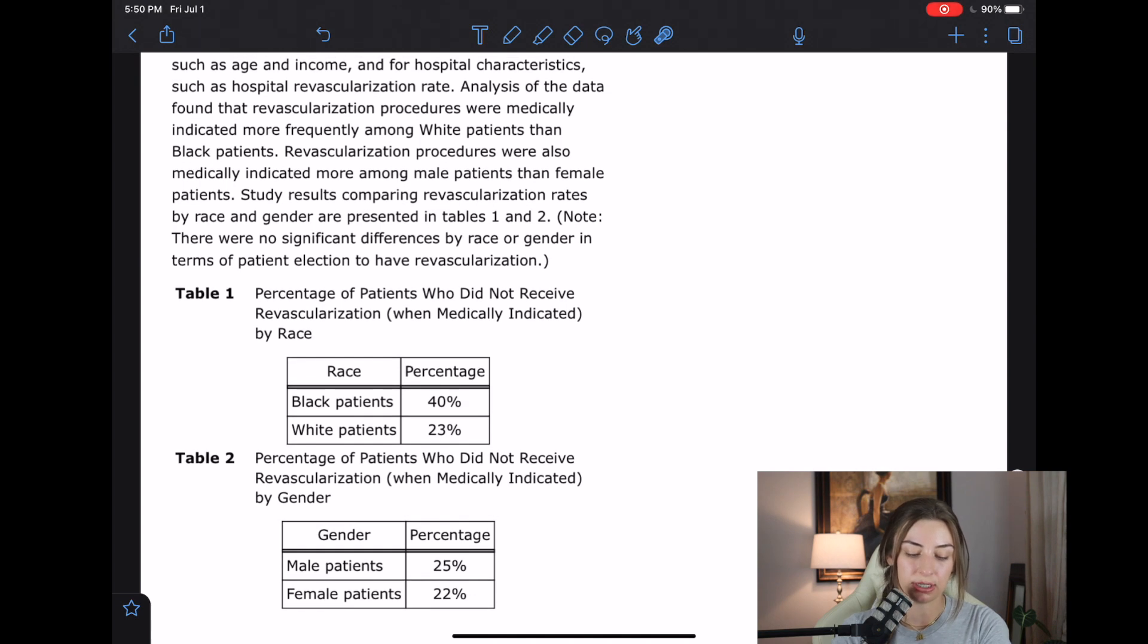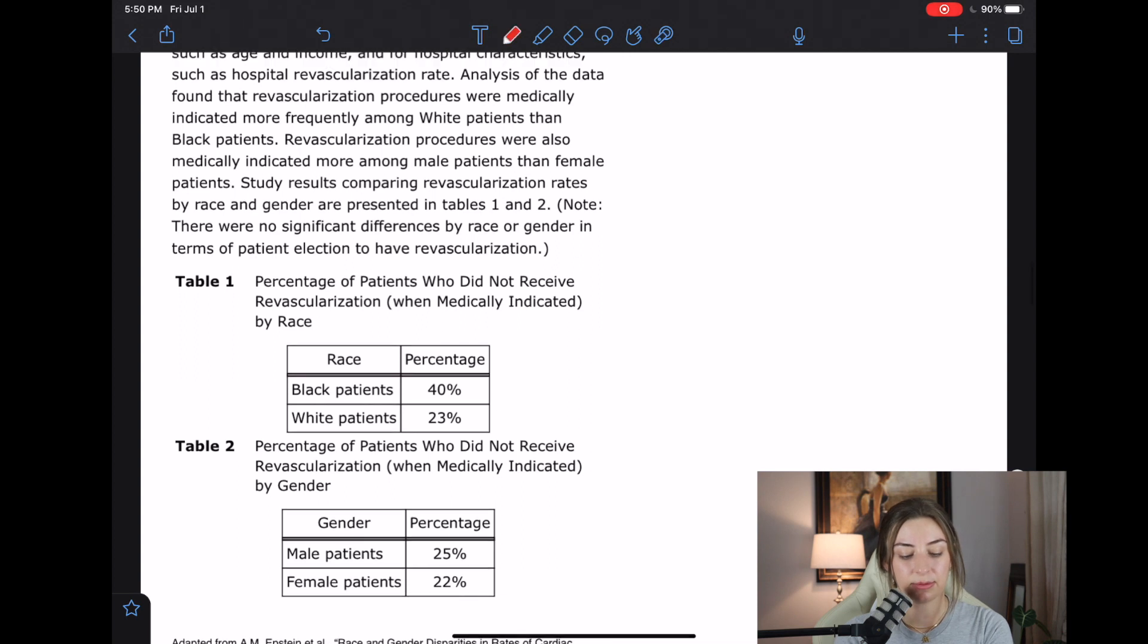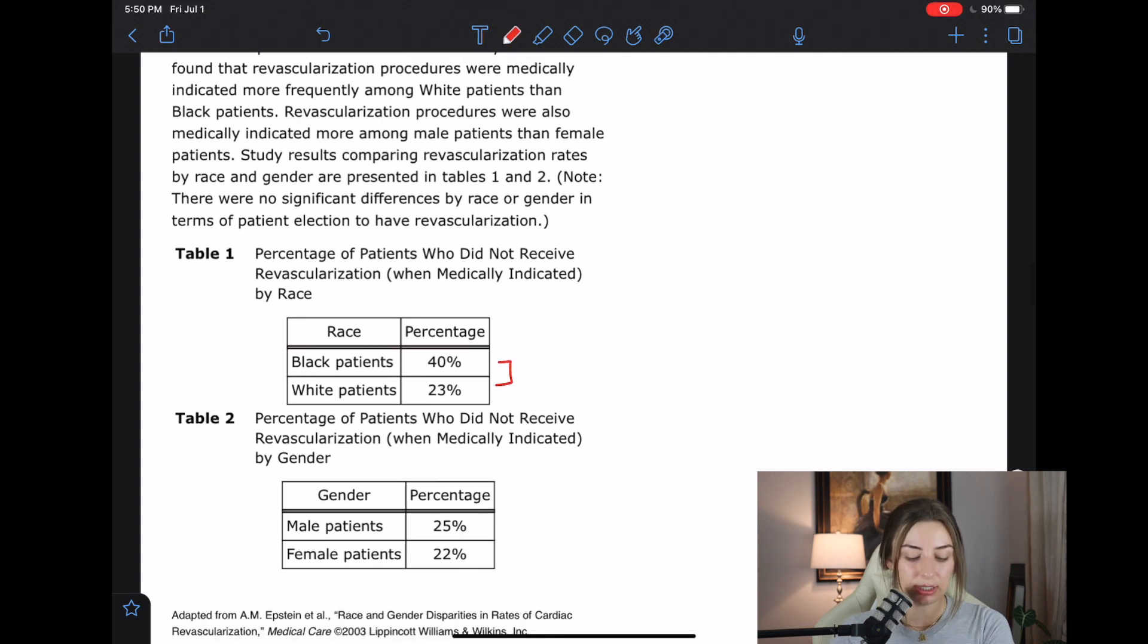Note there were no significant differences by race or gender in terms of patient election to have revascularization. So aka the patients, it's not like white patients were more like, no, I don't want revascularization. Like they didn't have a difference in that. Table one says percentage of patients who did not receive revascularization when medically indicated by race. So we don't have any markers of significance, but I would venture out to say that that's probably a significant difference.